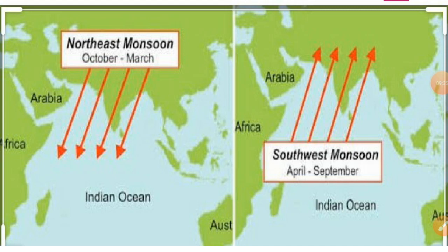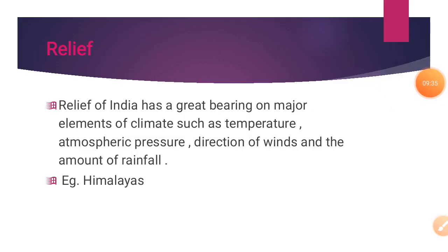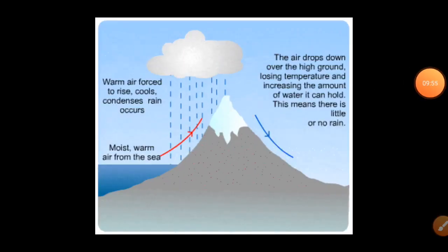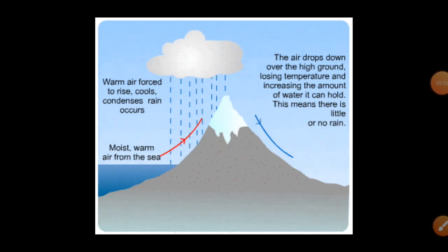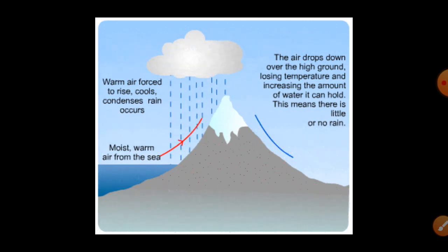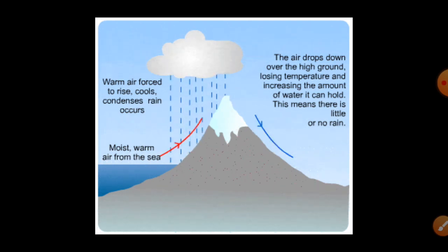See the picture: the northeast monsoon blows in the months of October to March, and the southwest monsoon blows in the months of April to September. The next factor is relief, which means landforms. Relief of India has a great bearing on major elements of climate such as temperature, atmospheric pressure, direction of wind, and the amount of rainfall. For example, the Himalayas act as a barrier to the freezing cold wind that blows from Central Asia and keep the Indian subcontinent warm. As such, North India experiences a drop in climate even during winter.